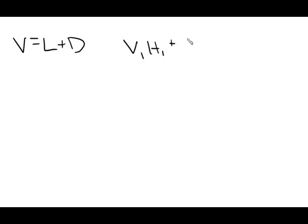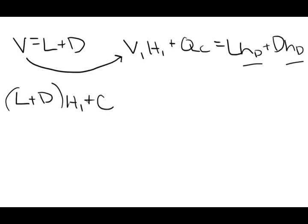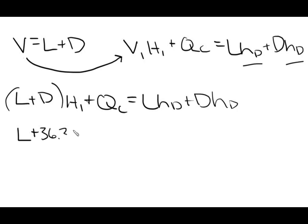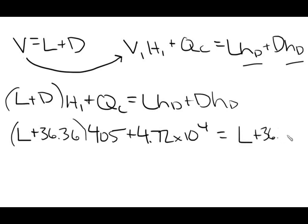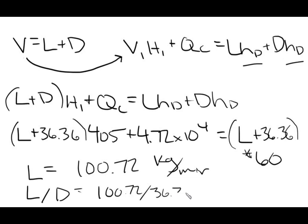Moving on to the condenser equations: V = L + D, and V·H_V + Q_C = L·H_L + D·H_D. Substituting V = L + D into the energy balance: (L + 36.36) × 405 + 4.72 × 10⁴ = (L + 36.36) × 60. Solving for L gives L = 100.72 kg/min. Therefore, L over D = 100.72 / 36.36, so the external reflux ratio L/D = 2.77.